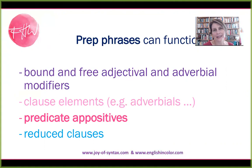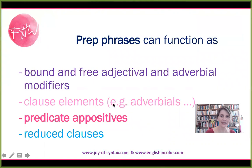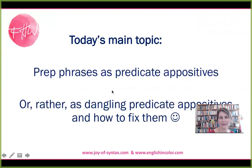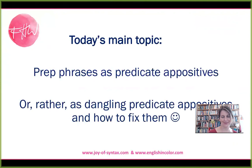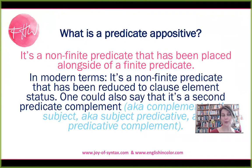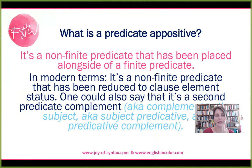And they can be predicate appositives and they can be reduced clauses. Today I wanted to discuss them mostly as predicate appositives — or rather, when things have gone awry and they're meant to be predicate appositives but they dangle. Let's quickly review what a predicate appositive is. A predicate appositive is basically a second predicate, but a non-finite or verbless one that has been placed alongside of the finite predicate. We could also say it is a predicate complement placed alongside a main clause or a subclause.